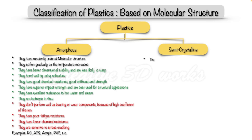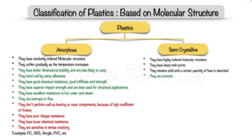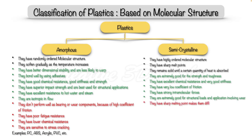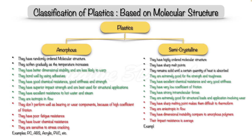Now let's see the semi-crystalline plastics. Semi-crystalline plastics have a highly ordered molecular structure and sharp melt points. They remain solid until a certain quantity of heat is absorbed. They are extremely good for strength and toughness, have excellent chemical resistance, very good stiffness, and very low coefficient of friction. They have strong intermolecular forces and are extremely good for structural loads and applications involving wear. Their sharp melting point makes them difficult to thermoform. They are anisotropic in flow and have dimensional instability compared to amorphous polymers. Their impact resistance is average. Examples: PP, nylon, HDPE, acetal, PBT, LDPE.